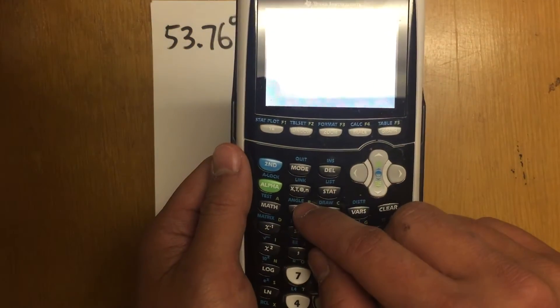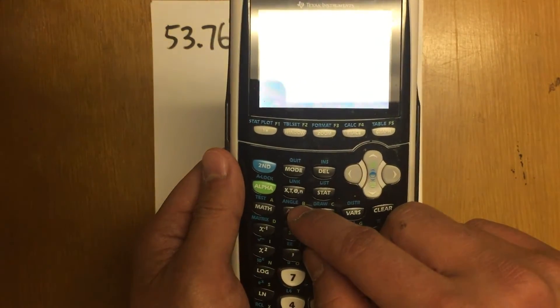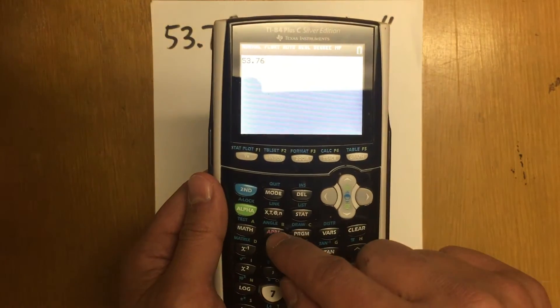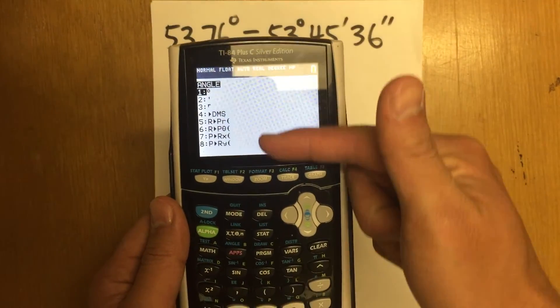Then, I'm just going to go ahead and do the conversion. To do so, you see that we have this angle. This is in blue. That means I have to hit second and then angle in order to get to this menu.